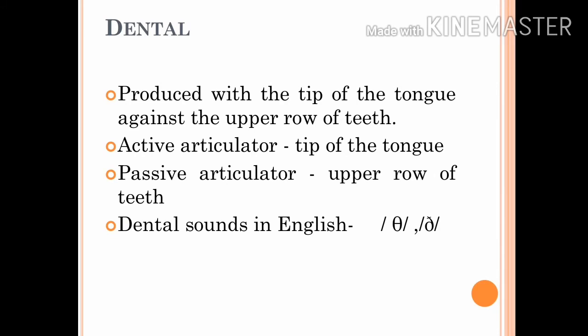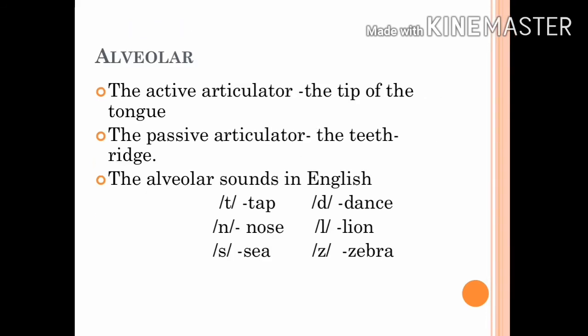Dental: the tip of the tongue is the active articulator and the upper row of teeth is the passive articulator. The sounds produced with the tip of the tongue against the upper row of teeth are called dental. The sounds T and D as in the words 'tin' and 'den' are the two dental sounds that occur in English.